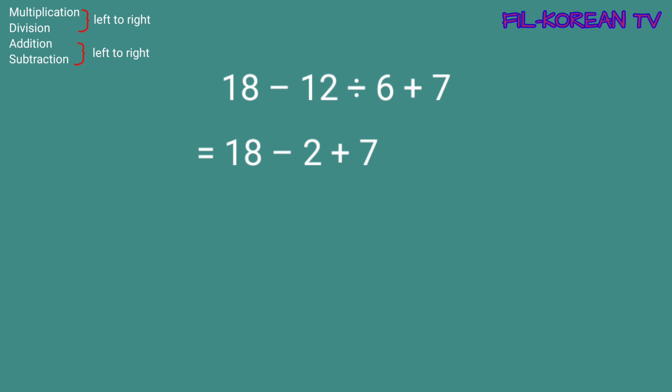Next, left to right na yung pag-solve, dahil subtraction at addition na lang yung natitirang operations. So mag-subtract muna tayo bago mag-add. 18 minus 2 equals 16. Kaya naging 16 plus 7. Then isolve natin ito. 16 plus 7 equals 23. So the answer for this problem is 23.